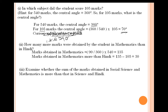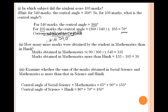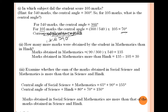Third part: examine whether the sum of marks in Social Science and Mathematics is more than that in Science and Hindi. Central angle of Social Science plus Mathematics is 65 plus 90, which is 155 degrees. Central angle of Science plus Hindi is 80 plus 70, which is 150 degrees. Since 155 is greater than 150, marks in Social Science and Mathematics are more than marks in Science and Hindi. It is not necessary to find the exact marks — comparing the central angles is sufficient.